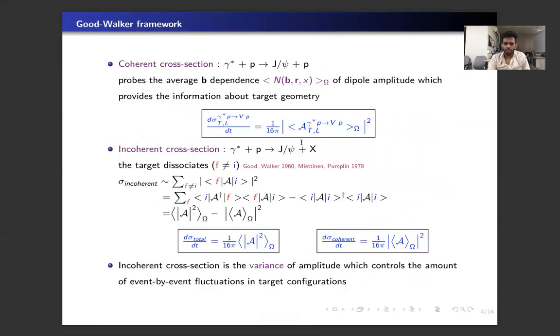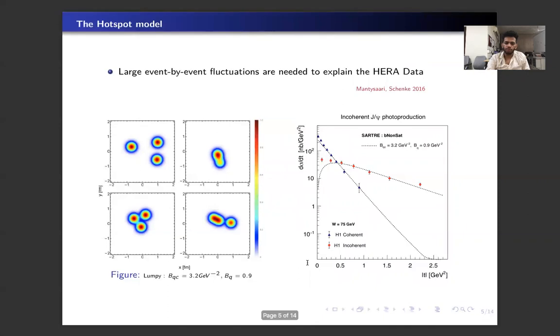Now when we have fluctuations in the target geometry, we employ the Good and Walker formalism where the total cross-section probes the second moment of the amplitude, and the coherent cross-section probes the first moment of the amplitude, and the incoherent cross-section is the variance of amplitude for a Gaussian geometry.